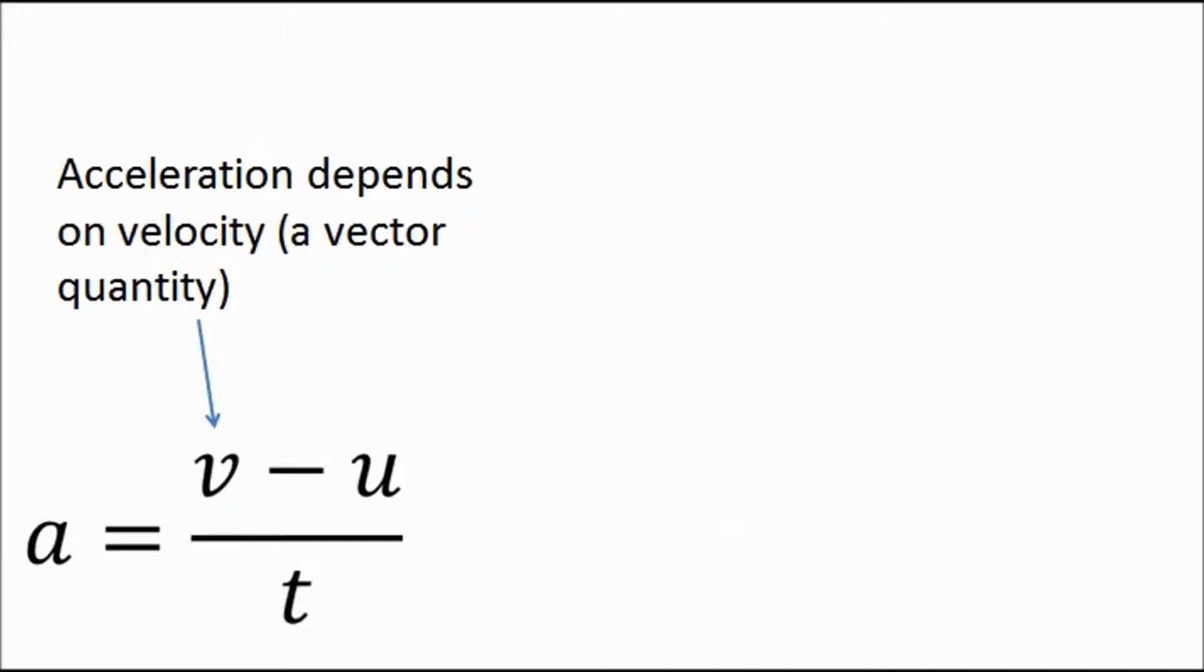Let's have a look at the acceleration equation that we met earlier on. A equals V minus U over T. Now, V is velocity. And if you remember just now, velocity is a vector quantity. And that means it depends on direction. Speed does not depend on direction. If you're doing 20 meters per second, you're doing 20 meters per second. It doesn't matter if you're doing it in a straight line or if you're doing it around a corner.